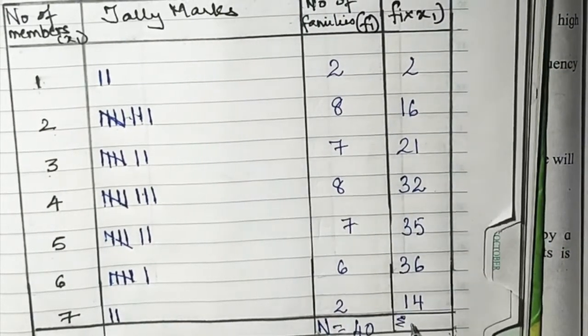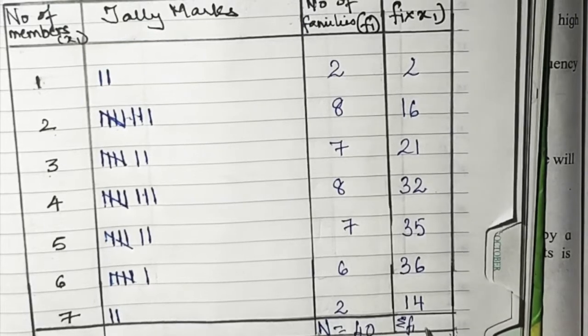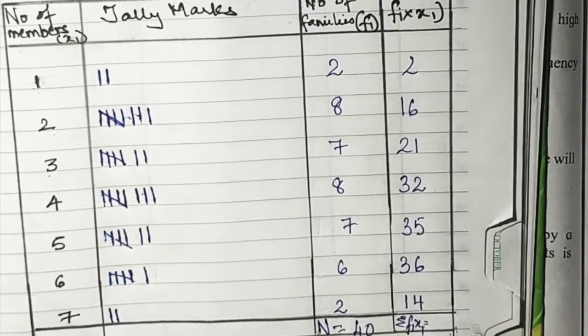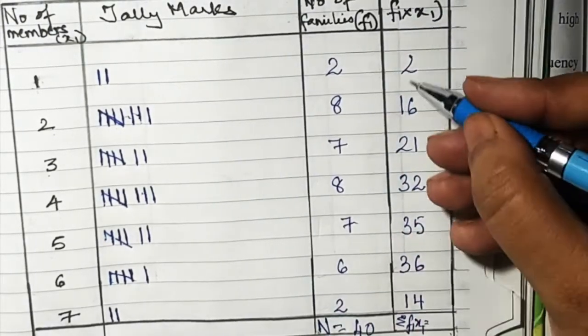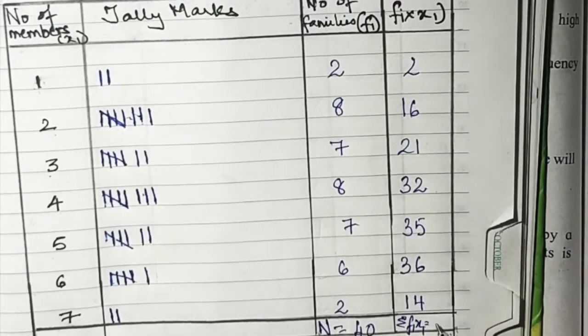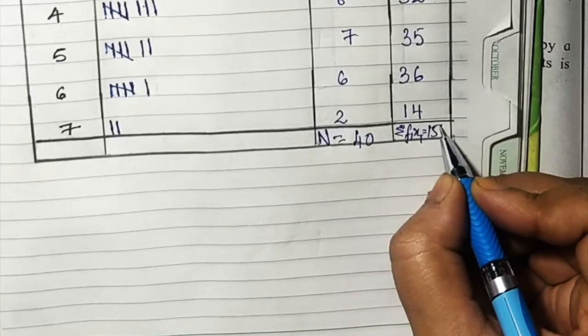Now add up all this and you get the sum, the total summation of fi into xi. When we add all this we get 156, so I'll write here 156.